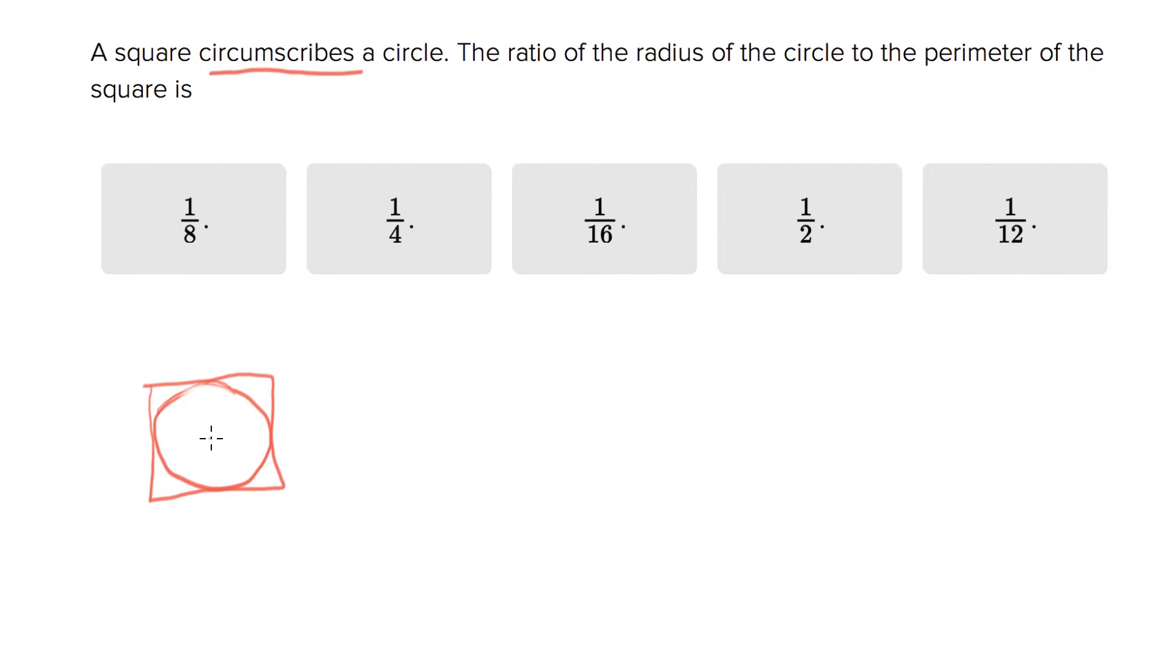Now, rather than trying to keep track of radius and perimeter using letters, which I can find kind of confusing, let's just define the radius of the circle to be 1. So the radius, they want the radius over perimeter, right? Radius of the circle over the perimeter of the square. Radius of the circle is 1.